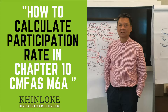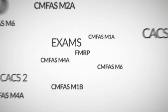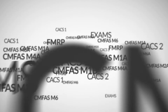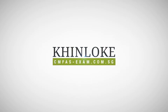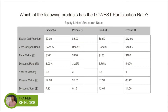Participation rates calculation found in Chapter 10 is not that straightforward. Look at this example — you are being given a table with lots and lots of information. And the question is: what is the lowest participation rate product?